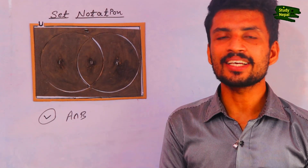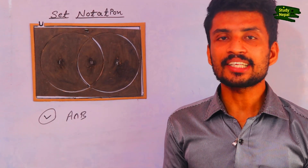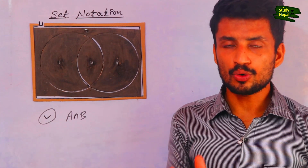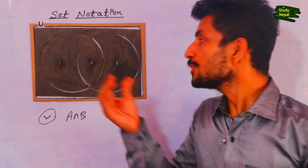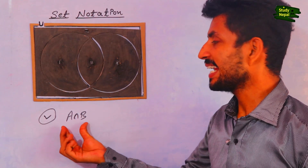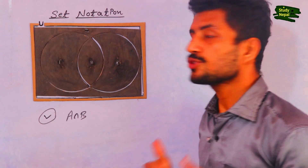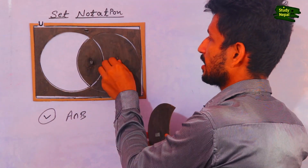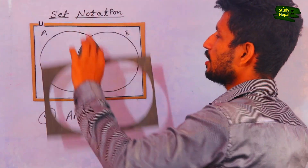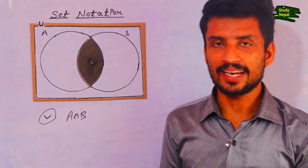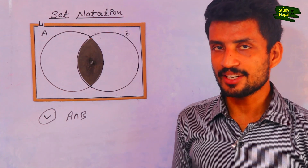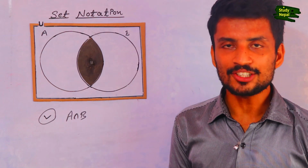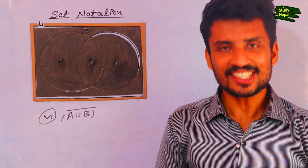The fifth portion is A intersection B. Intersection means the common part of the given sets. Here, A intersection B means we have to show the common part of A and B together in this Venn diagram. This is A intersection B — the common part of both A and B.